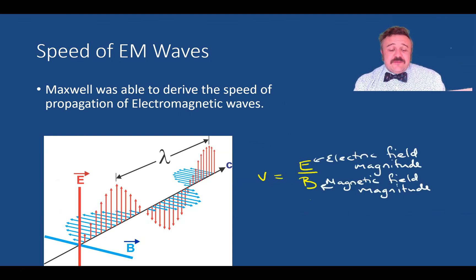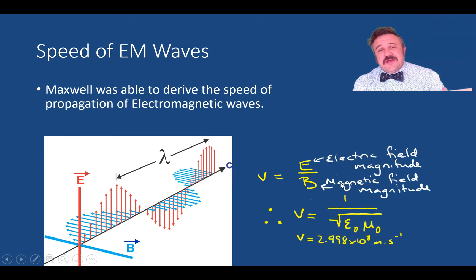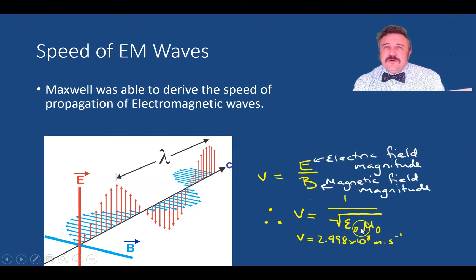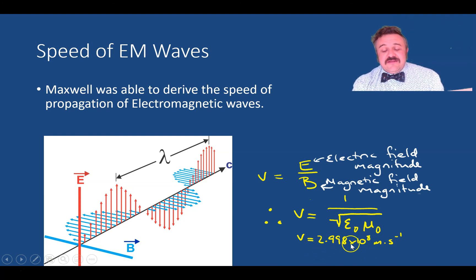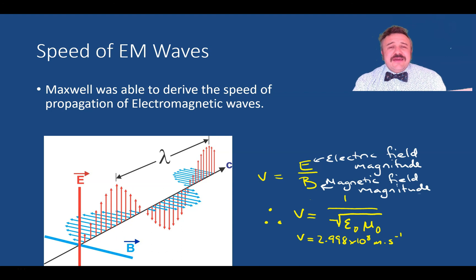Maxwell was able to derive the speed of electromagnetic waves: velocity equals the electric field magnitude divided by the magnetic field magnitude, which becomes one over the square root of the permittivity of free space multiplied by the permeability of free space, giving approximately 2.998 × 10⁸ meters per second. That is the specific reference of Maxwell's equations into each aspect of electromagnetic waves.